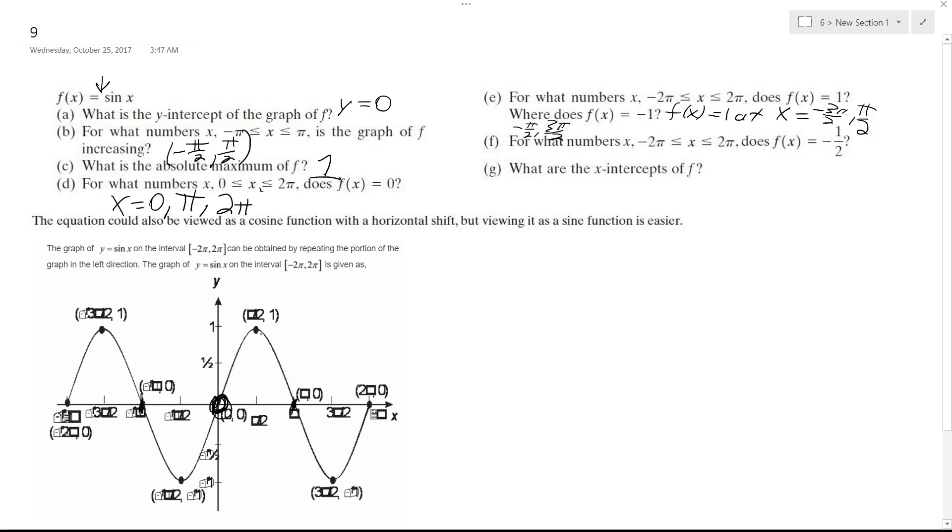So where does it equal negative one half? And that's on these intervals, so it's going to hit it four times, negative one half. So that'd be at negative 11 pi over six.